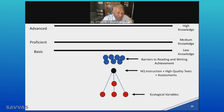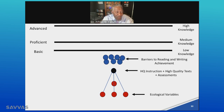Barriers can be fluency, comprehension, monitoring, phonemic awareness, decoding, writing, et cetera. And then you see the gauges here — how do we move kids to basic and low knowledge, or proficient and medium knowledge, or advanced and high knowledge?